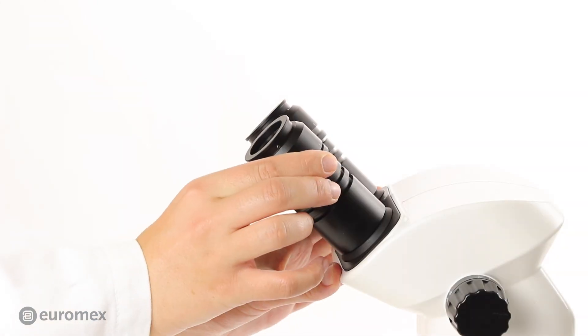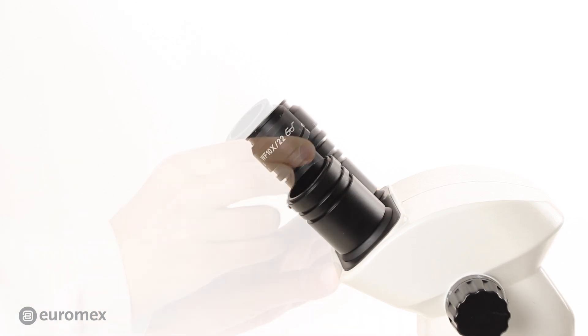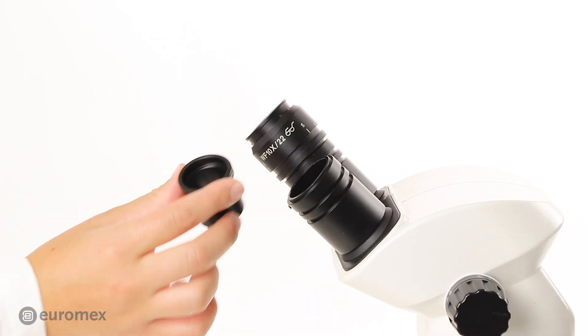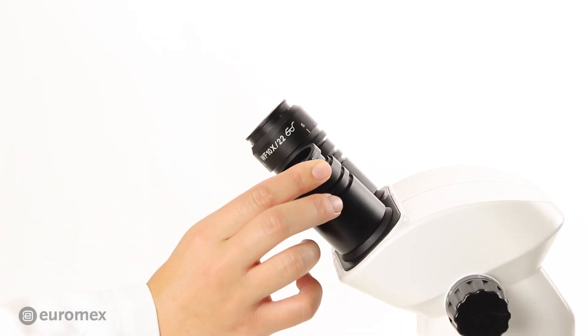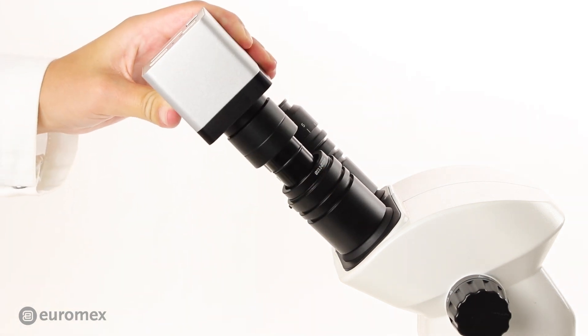How to proceed with a binocular microscope: Remove one of the eyepieces and insert the fitting conversion adapter. Insert the camera with the standard C-mount adapter.